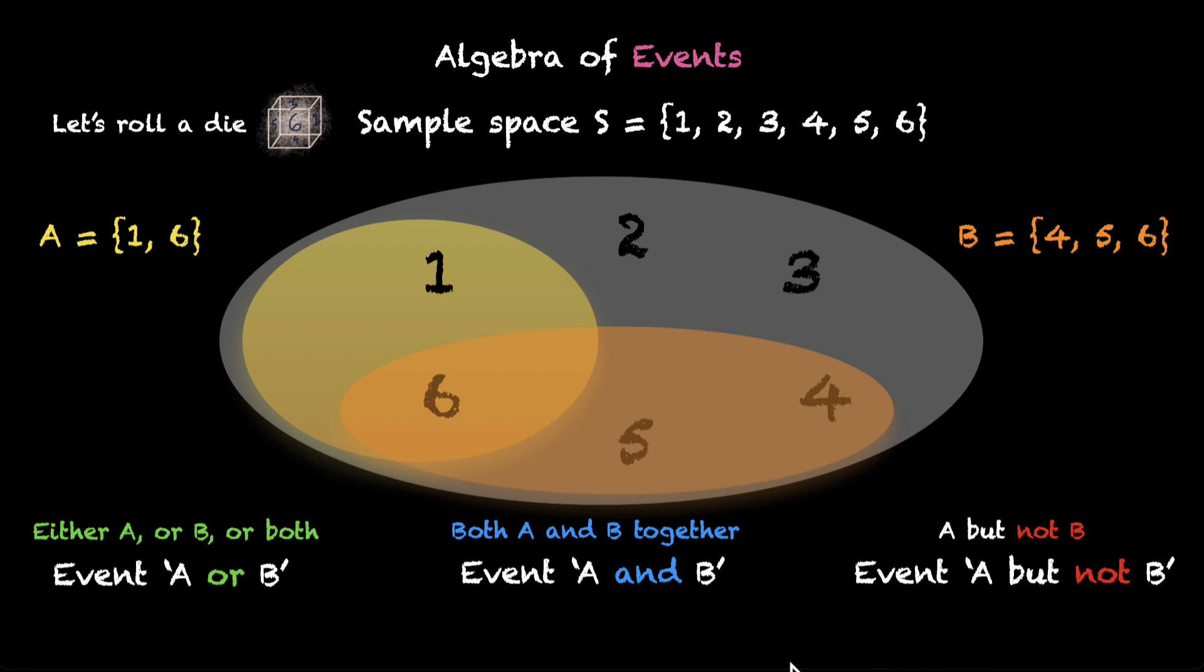Now, let's see what we have for these 3 events. Let's pick the middle one first. Event A and B. Where do we see both events A and B happening together? Well, they're happening together for this sample point 6. Whenever 6 happens, both event A and event B happen. So, for this event A and B, we can say that we have this number 6. So, this event A and B is just the event {6}.